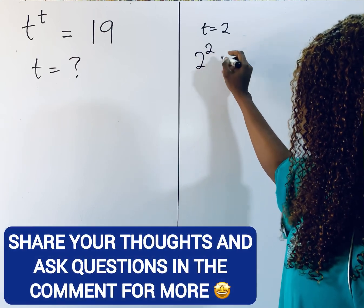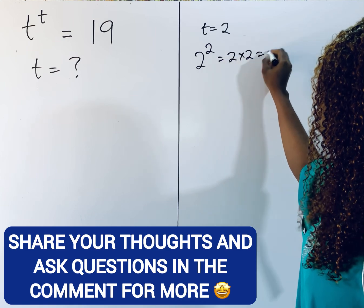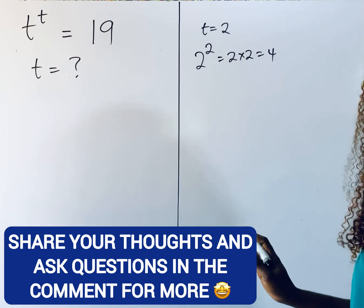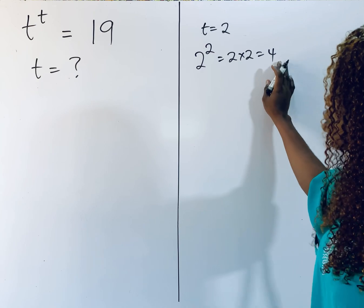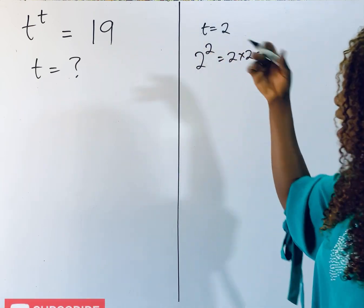And 2 to the power of 2 is 2 times 2, which will give you 4. Now 4 is not close to 19, so t can't be 2.